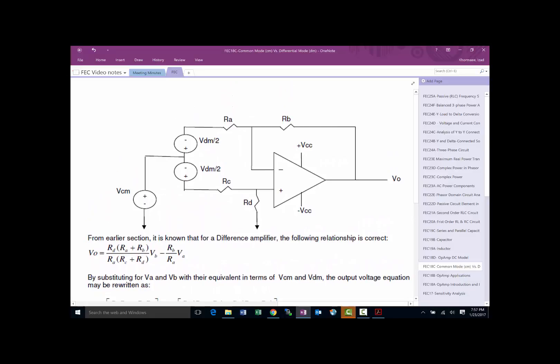On the VA side, we're going to have VCM minus VDM, and on this side we're going to have VCM plus VDM. So literally, we replace VA and VB with this model.